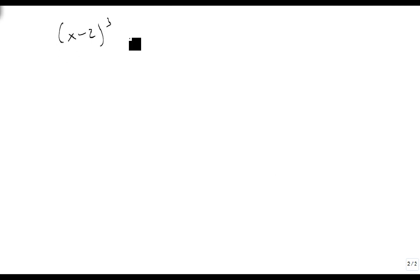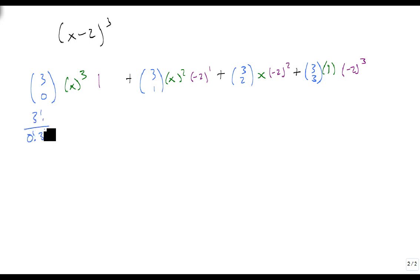x minus 2 cubed is going to be a 4 term. It's going to be 3 choose 0 times x cubed minus 2 to the 0, plus 3 choose 1, x squared times minus 2 to the 1, plus 3 choose 2, x minus 2 squared, plus 3 choose 3, 1. This should be written as a 1 as well, since it's to that power, minus 2 cubed. Remember that 3 choose 0 is 3 factorial over 0 factorial times 3 factorial. That just leaves a 1.